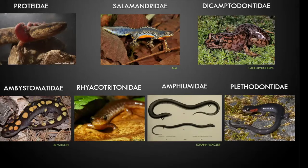The vast majority of salamanders undergo internal fertilization — your seven other families. That includes proteids, your mud puppies; salamandrids, your true salamanders and newts; dicamptodontidae, the Pacific giant salamanders; ambystomatidae, mole salamanders; torrent salamanders; amphiumas; and then plethodons. Plethodons, as the most evolved salamanders, have a lot of interesting adaptations — they're lungless and use pheromones heavily in everything they do.